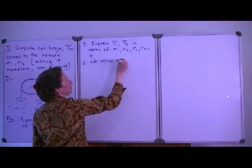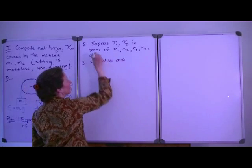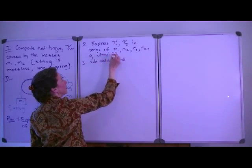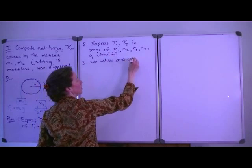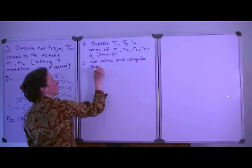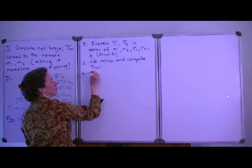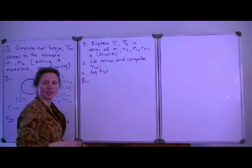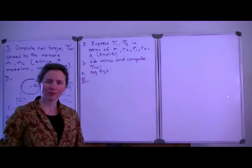Then we can substitute values. We might simplify somewhere in between there. Let's just say simplify, if we can. Then we'll substitute values and compute the net torque, which we will then report to the correct number of significant figures. So let's follow this plan and evaluate the problem.